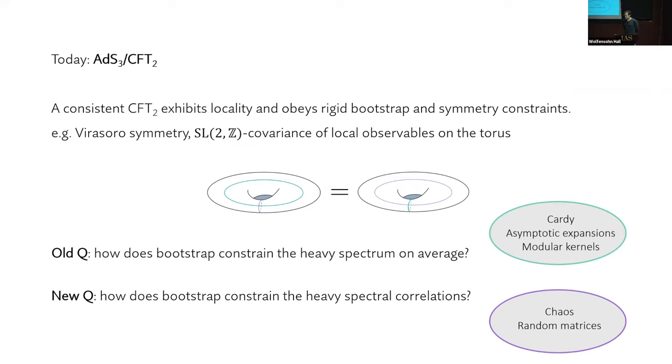An old question that the bootstrap community has addressed, really going back to the work of Cardy, is how does the bootstrap constrain the heavy spectrum of a CFT? On average, that is, in some integrated sense over some window of energies. This is the realm of the Cardy formula, various asymptotic expansions for OPE data, modular kernels, and so on.